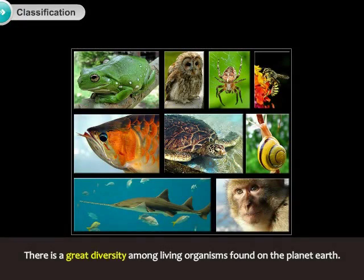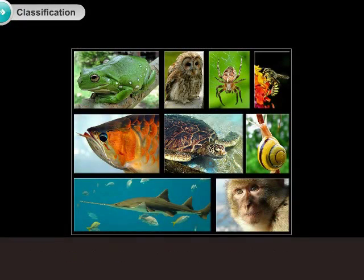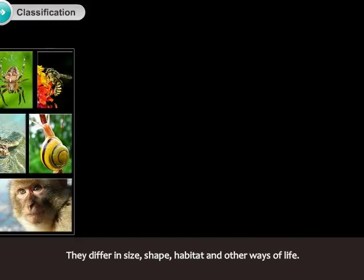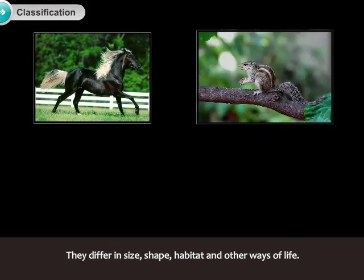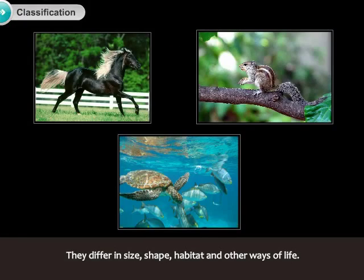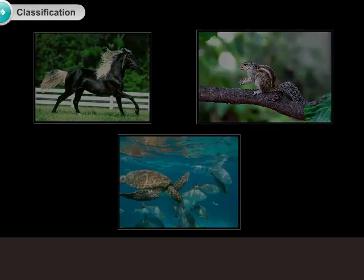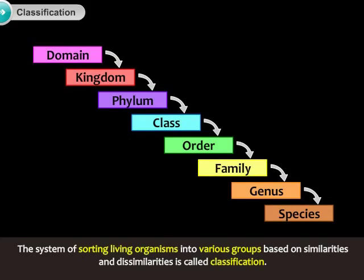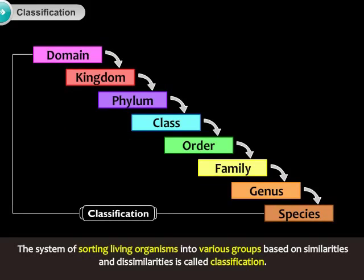There is a great diversity among living organisms found on planet Earth. They differ in size, shape, habitat and other ways of life. The system of sorting living organisms into various groups based on similarities and dissimilarities is called classification.